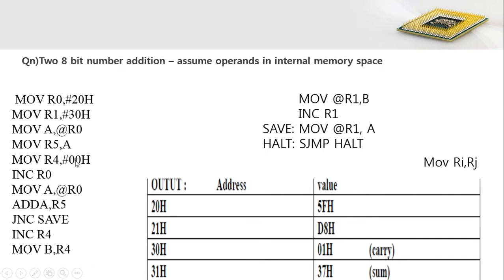R4 is loaded with immediate value 0, meaning R4 is cleared. Next, R0 is incremented by 1 so that R0 now points to internal memory byte address 21h. The instruction MOV A, @R0 loads the content of memory byte location 21h into the accumulator. Now we can perform the addition because one operand is available in A and the other is already loaded in R5.